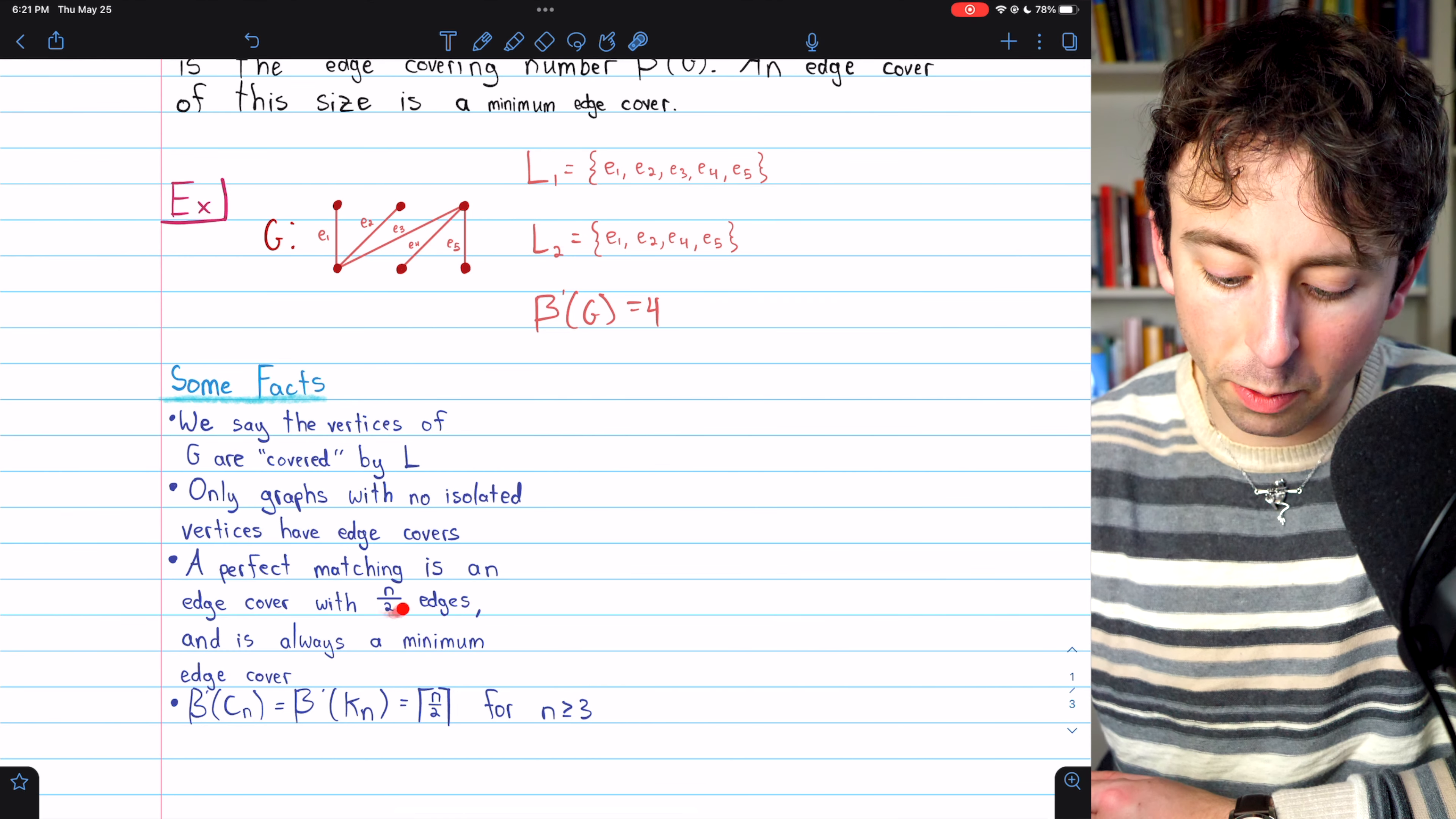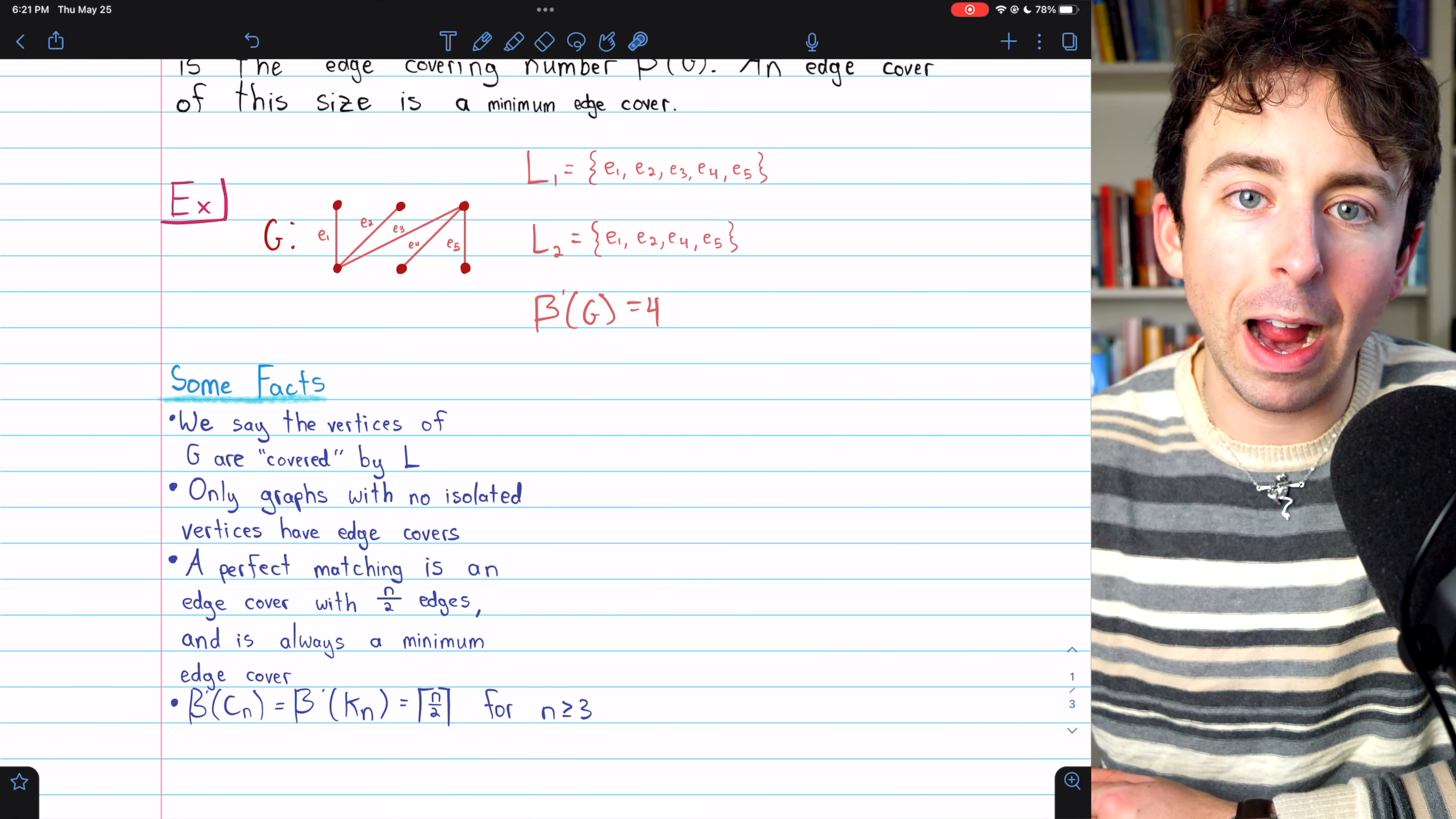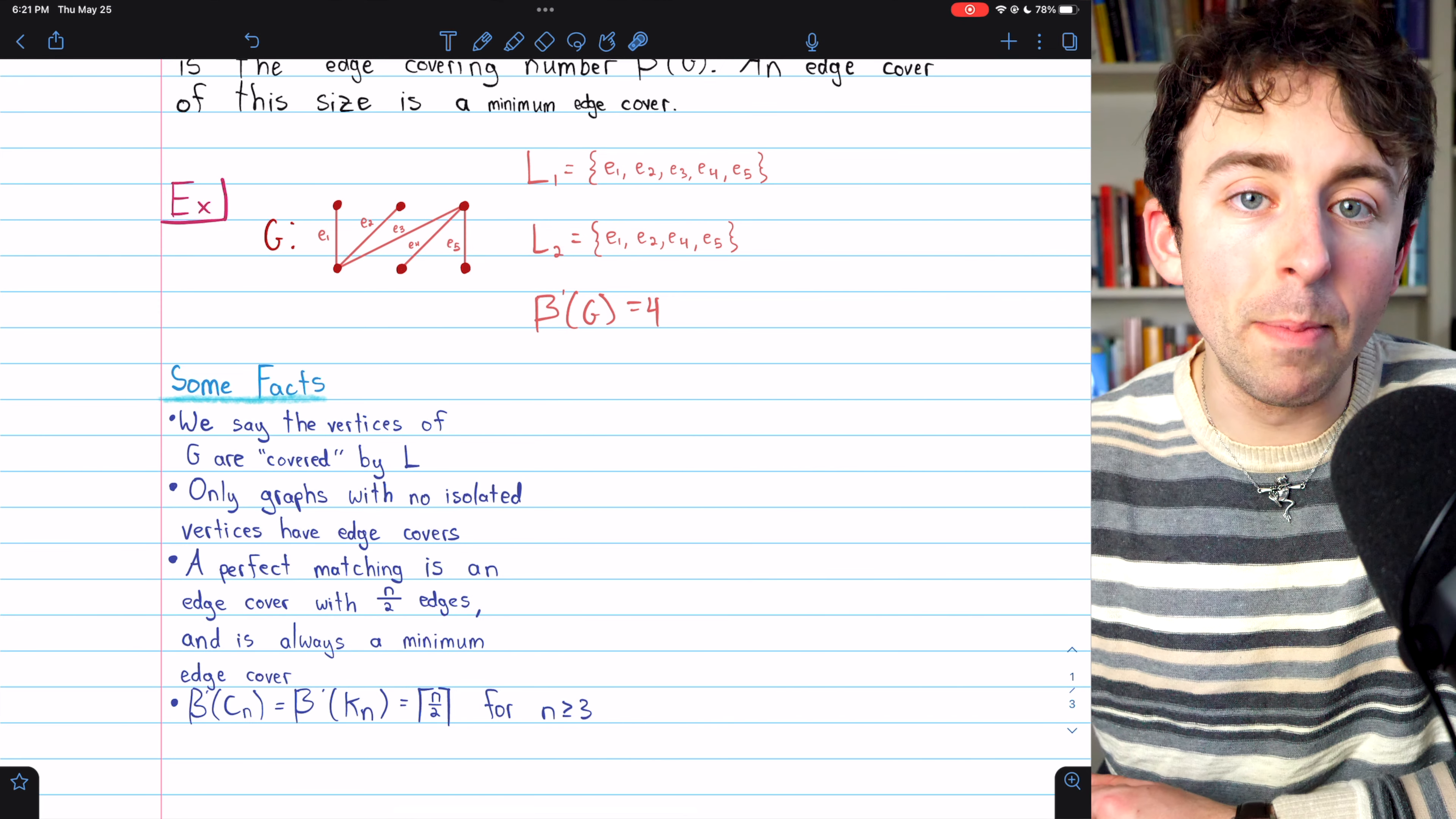Each edge is covering two distinct vertices unique from any other edge. And so in total, it would take N over two edges at least to cover all vertices in a graph. So if you have an edge cover with that minimum N over two edges, that will always be a minimum edge cover.